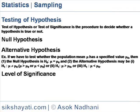Example: when we choose a 5% level of significance in a test procedure, there are about 5 cases in 100 that we would reject the hypothesis when it should be accepted. That is, we are about 95% confident that we have made the right decision.